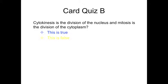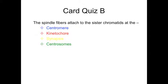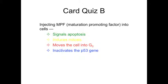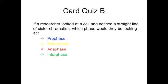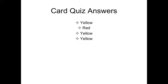Let's take a quick card quiz. Cytokinesis is the division of the nucleus and mitosis is the division of the cytoplasm — is this true or is it false? If a researcher looked at a cell and noticed a straight line of sister chromatids, which phase would they be looking at? Here are your answers.